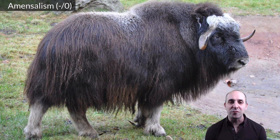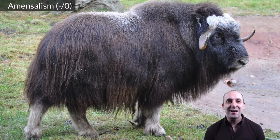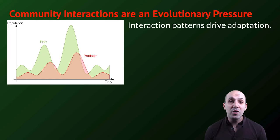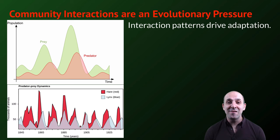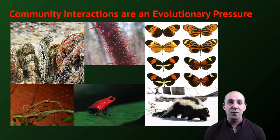These are the major types of community interactions that we see at the level of two different populations interacting, and it's important to understand that community interactions are a major evolutionary pressure. The patterns that we see in interactions drive the adaptations that we see among the populations in a particular community.